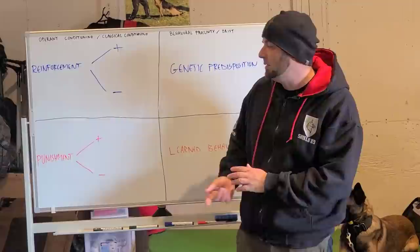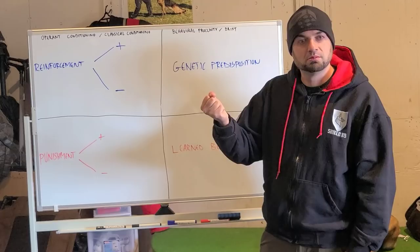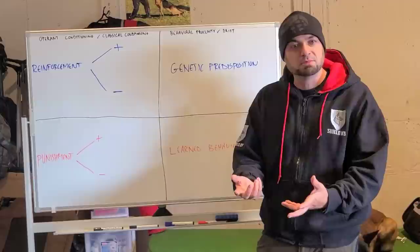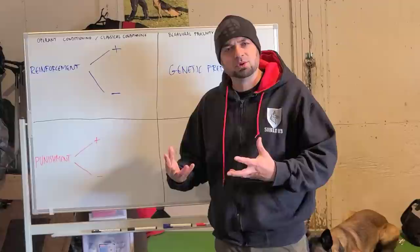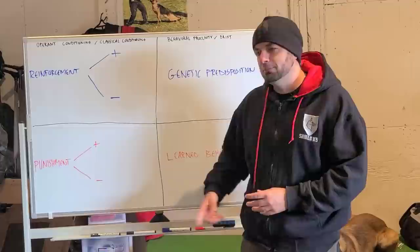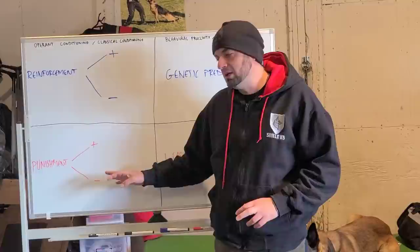Negative punishment — the withholding — the problem is we're back into desire. The dog has to really want the treats. I like to use negative punishment for obedience mistakes in the learning process. But for an active behavior the dog is performing, like aggression, negative punishment doesn't work. I'm not going to withhold food because he's being aggressive — I have to punish the aggression. Negative punishment is good for small things; it's not so much good for big things.